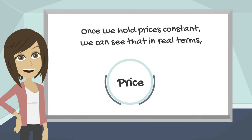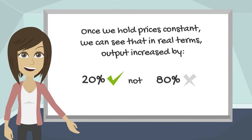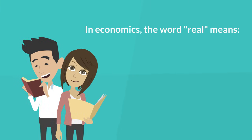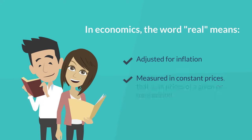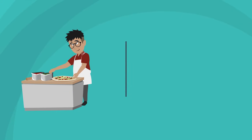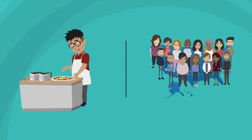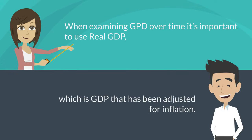Once we hold prices constant, we can see that in real terms, output increased by 20%, not 80%. So in economics, the word 'real' means that we have adjusted for inflation and measured in constant prices — that is, in prices of a given or base period. This is true for pizzerias, but also true for the economy at large. When examining GDP over time, it's important to use real GDP, which is GDP that has been adjusted for inflation.